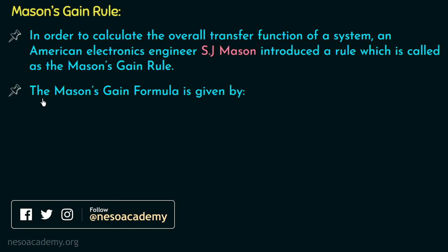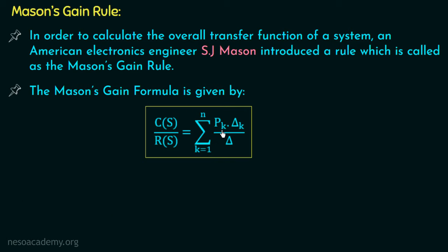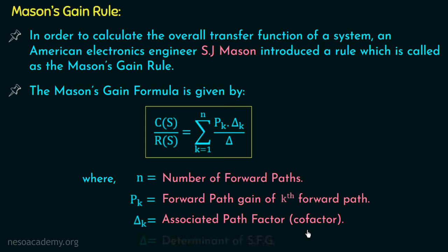The Mason's gain formula is given by C(s) over R(s), which is the transfer function of a system, equal to summation from k equal to 1 to n of P_k multiplied with Δ_k over Δ, where n is the number of forward paths, P_k is the forward path gain of the kth forward path, Δ_k is the associated path factor or cofactor, and Δ is the determinant of the SFG.